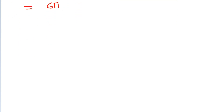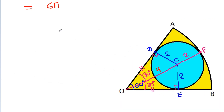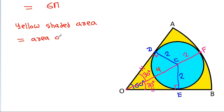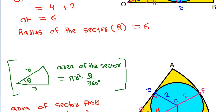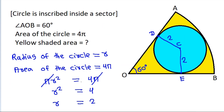The yellow shaded area equals the area of the sector minus the area of the circle, which is 6π minus 4π, and that will be equal to 2π. Thank you very much.